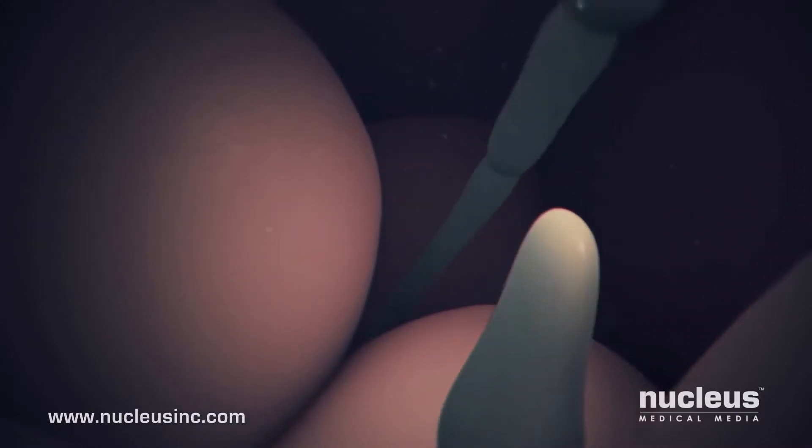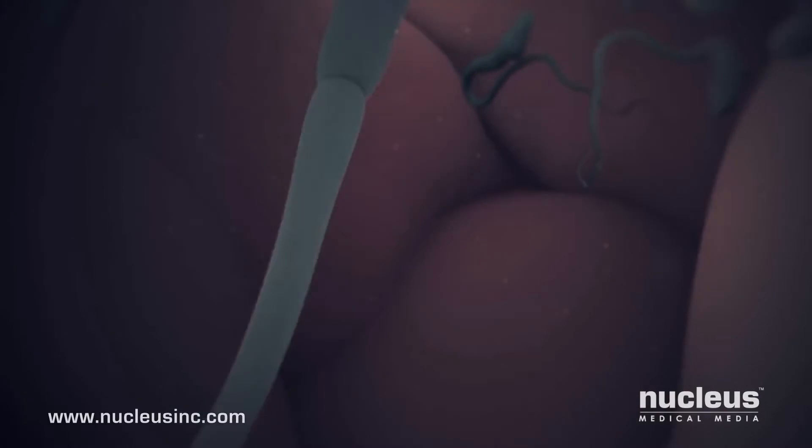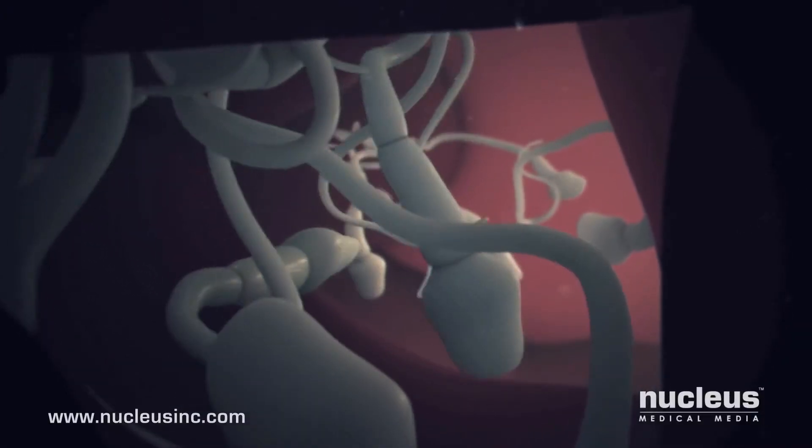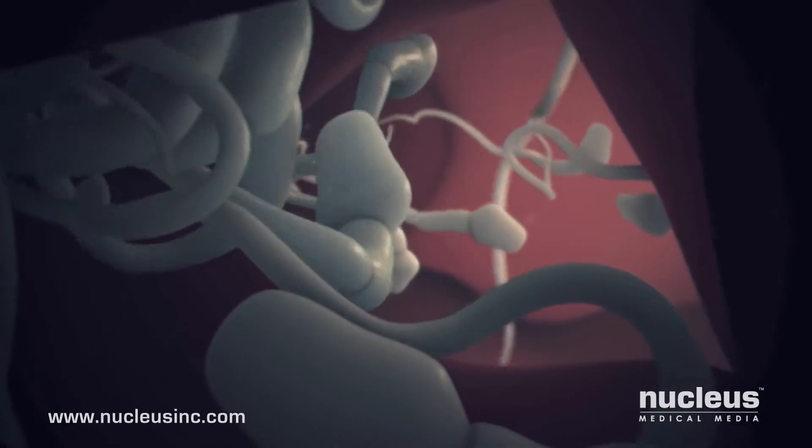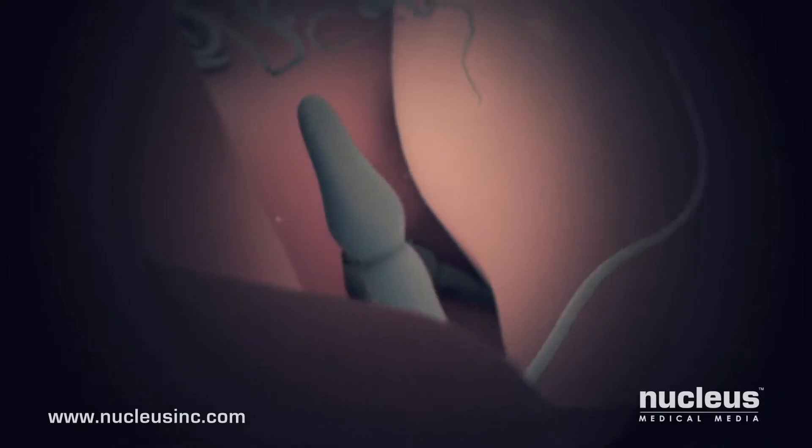Once inside the cervix, the sperm continues swimming toward the uterus, though millions will die trying to make it through the mucus. Some sperm remain behind, caught in the folds of the cervix, but they may later continue the journey as a backup to the first group.